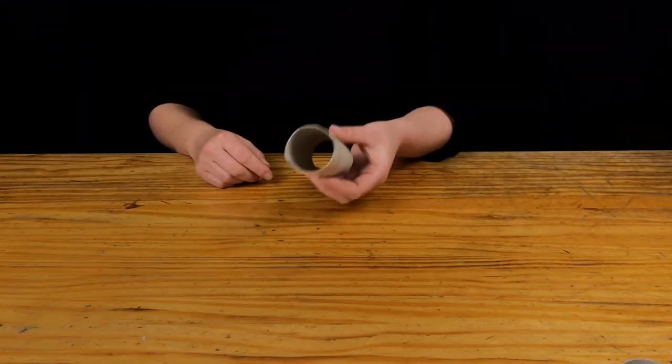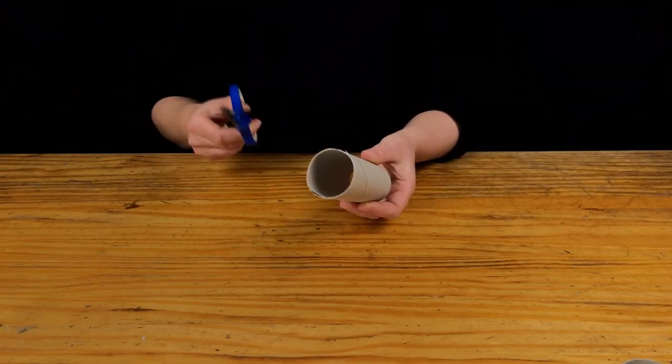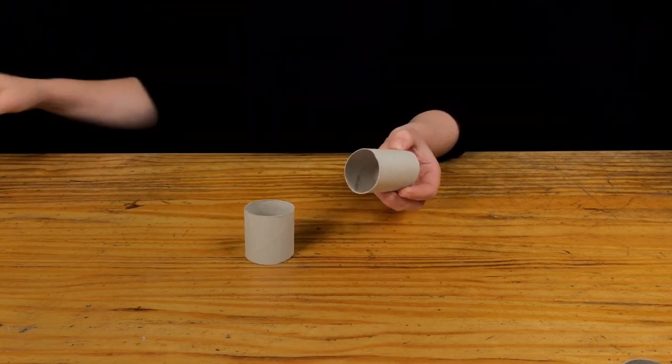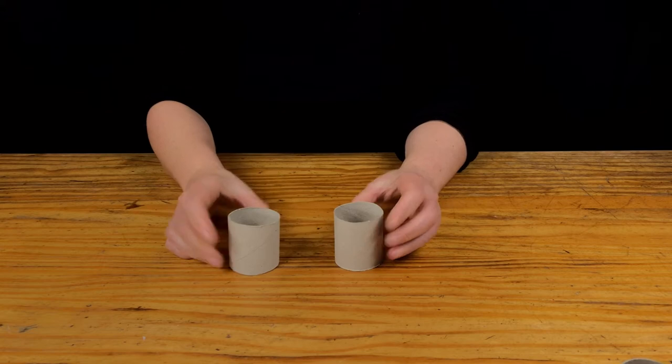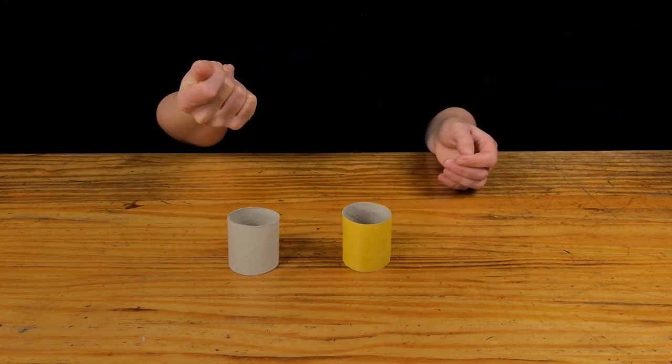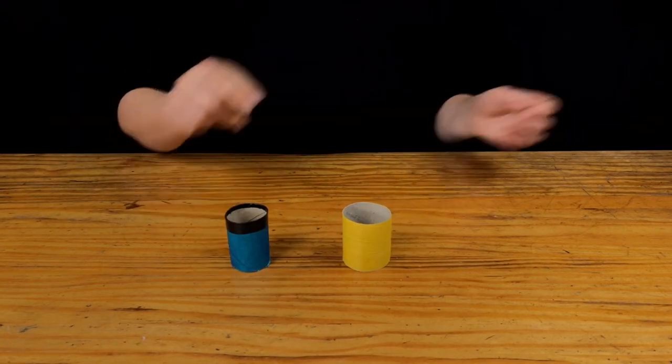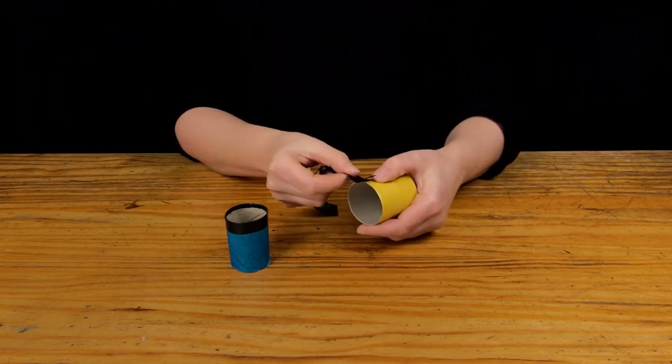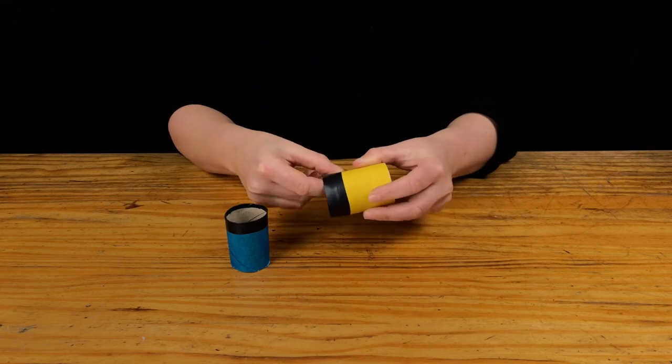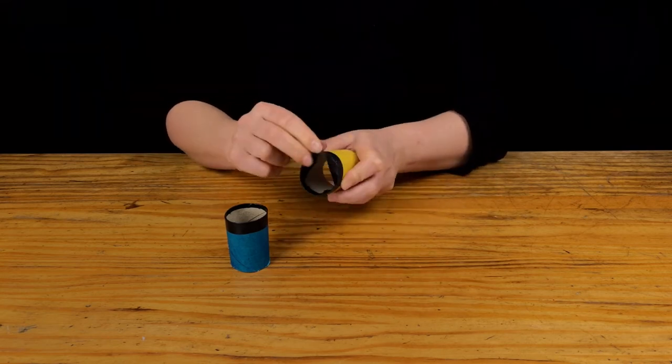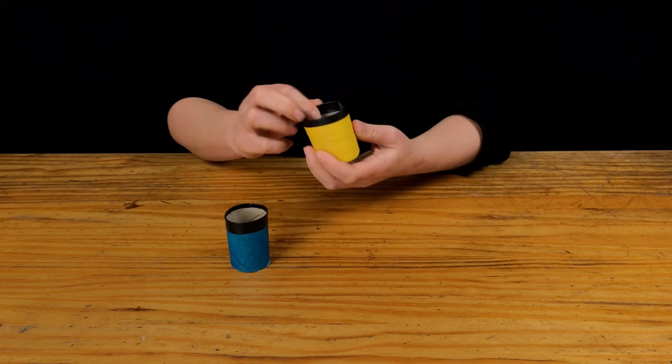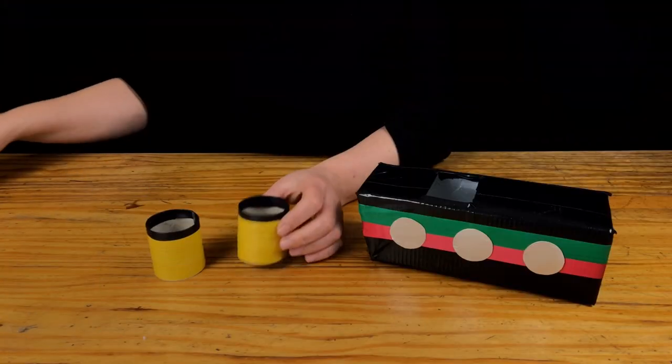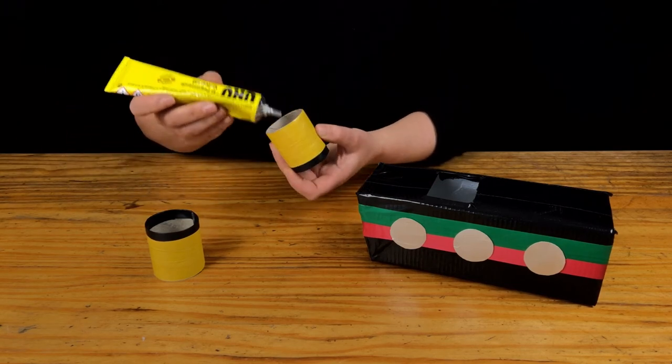Now for the funnels. Cut the cardboard toilet roll tube in half and decorate. You can cover with electrical tape like this or you can use paint. Use black tape to get that authentic funnel look by wrapping it around the top edge, then folding into the centre of the tube. Glue around the bottom edge of the funnels and attach to the carton.